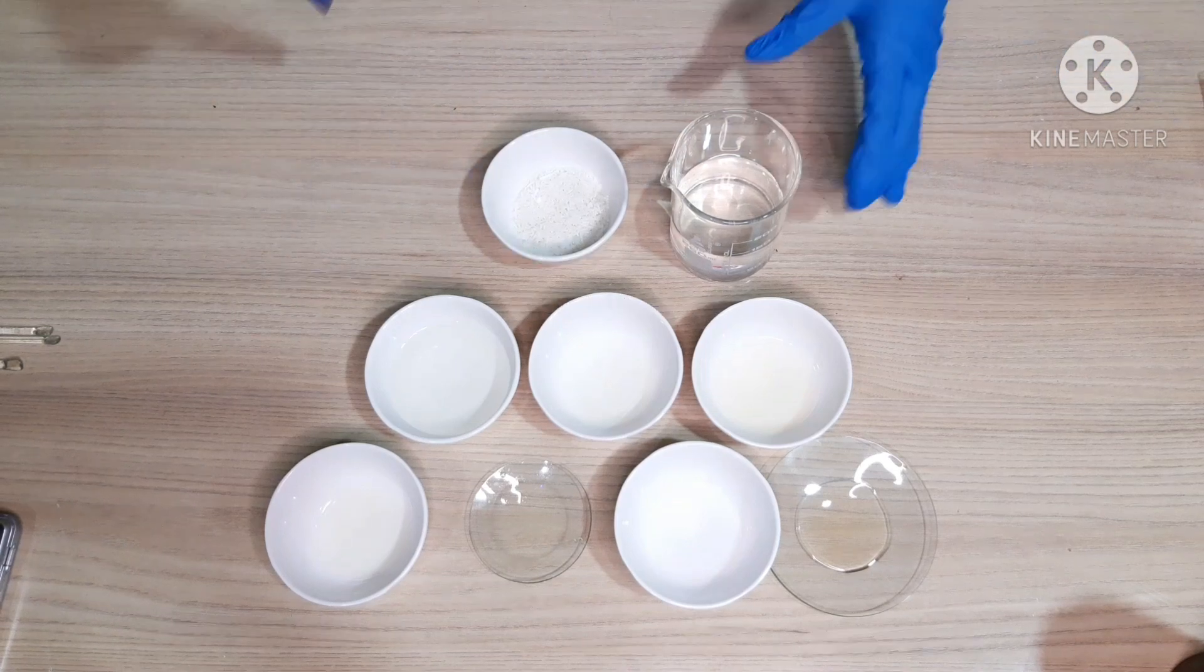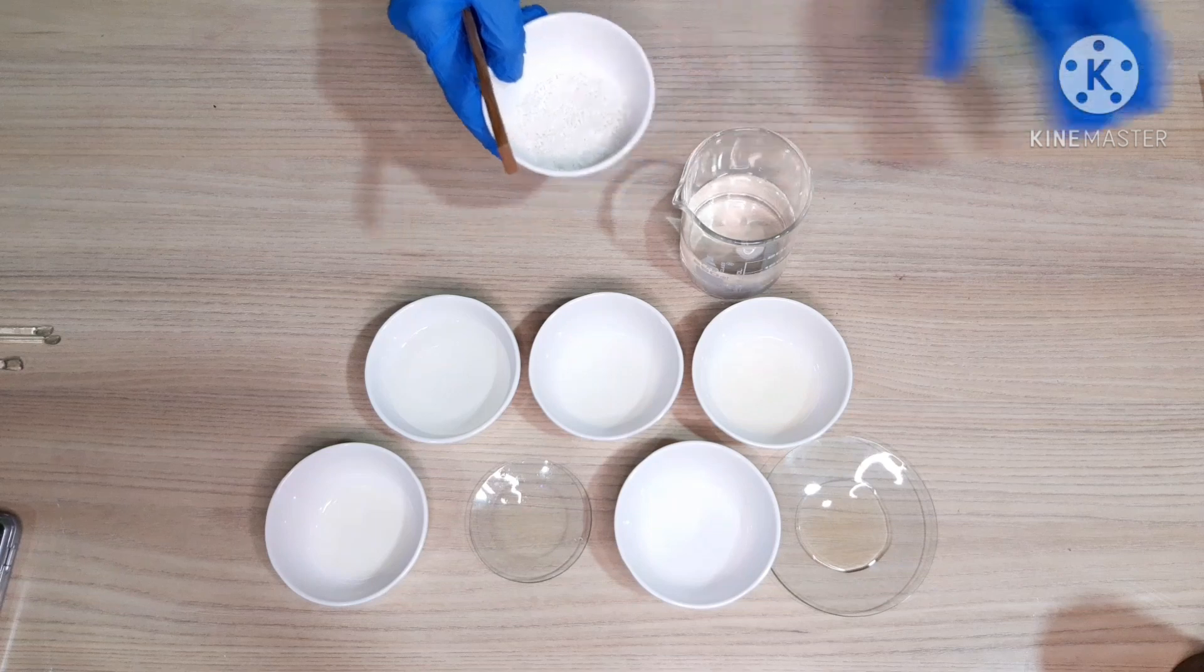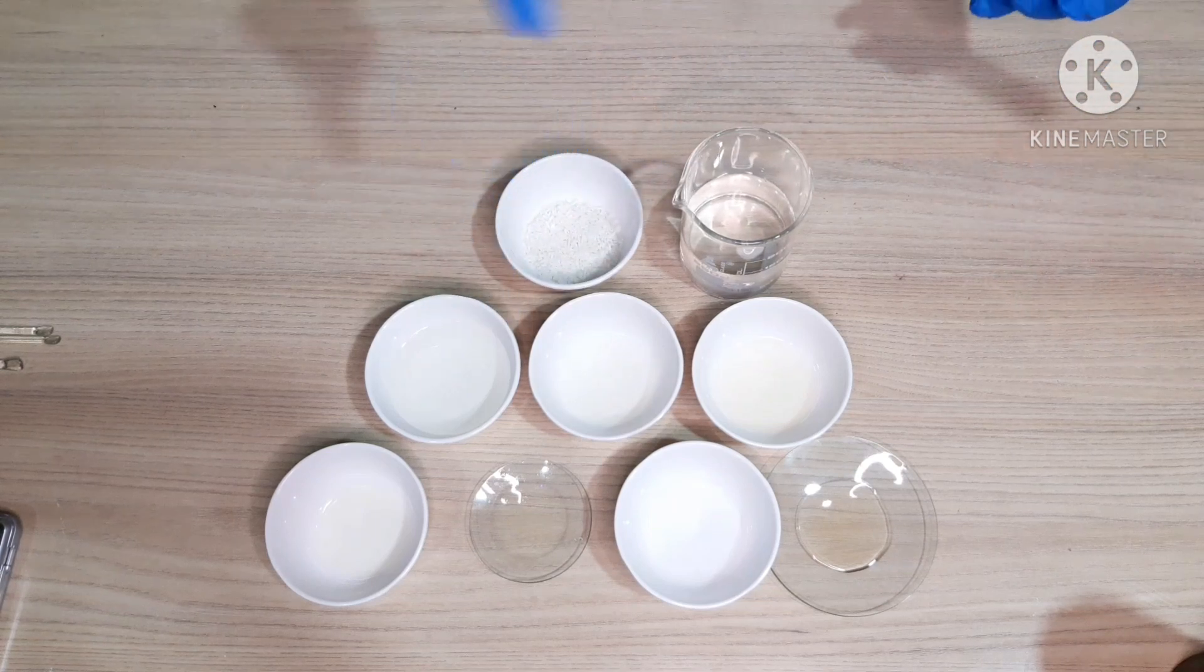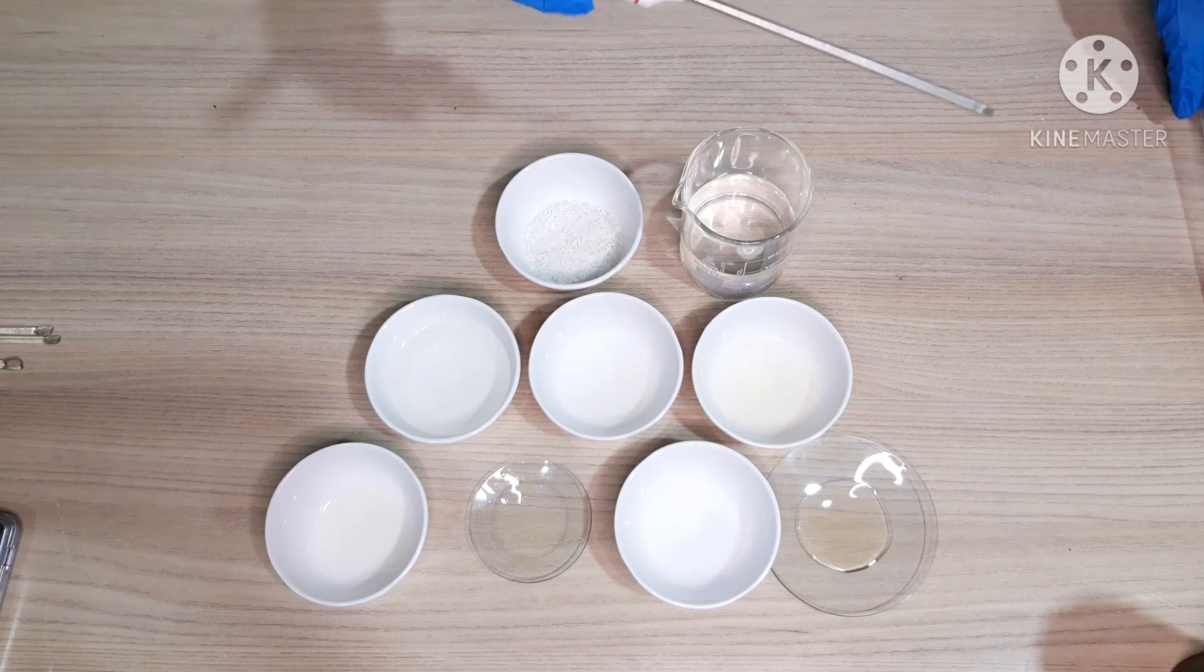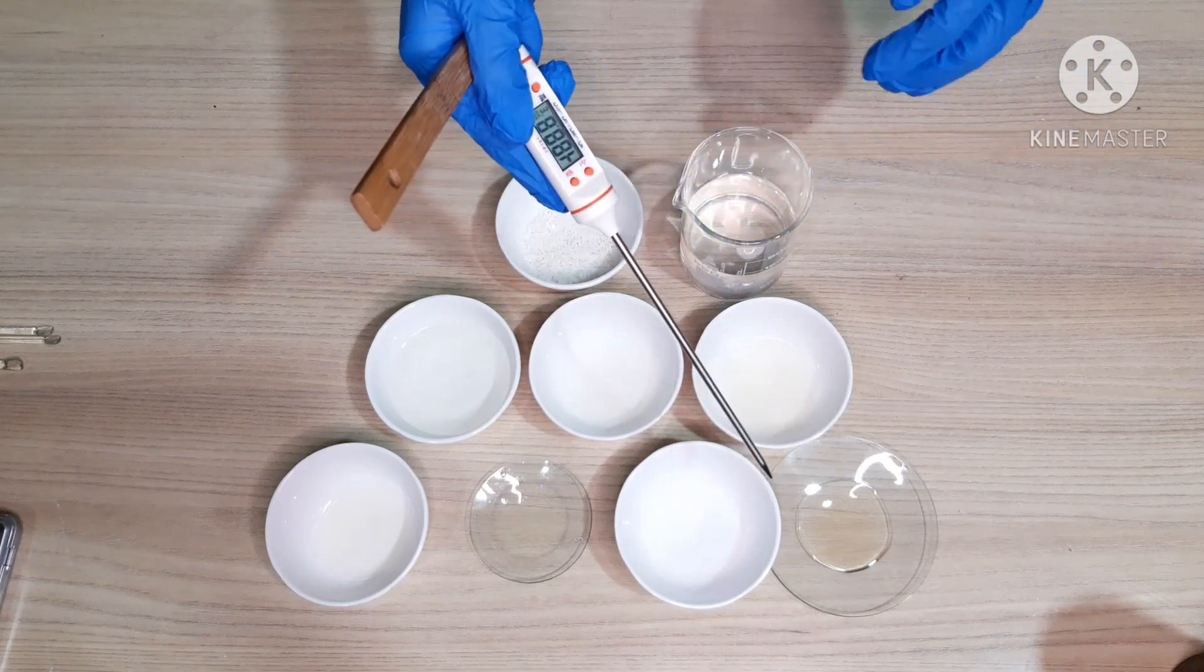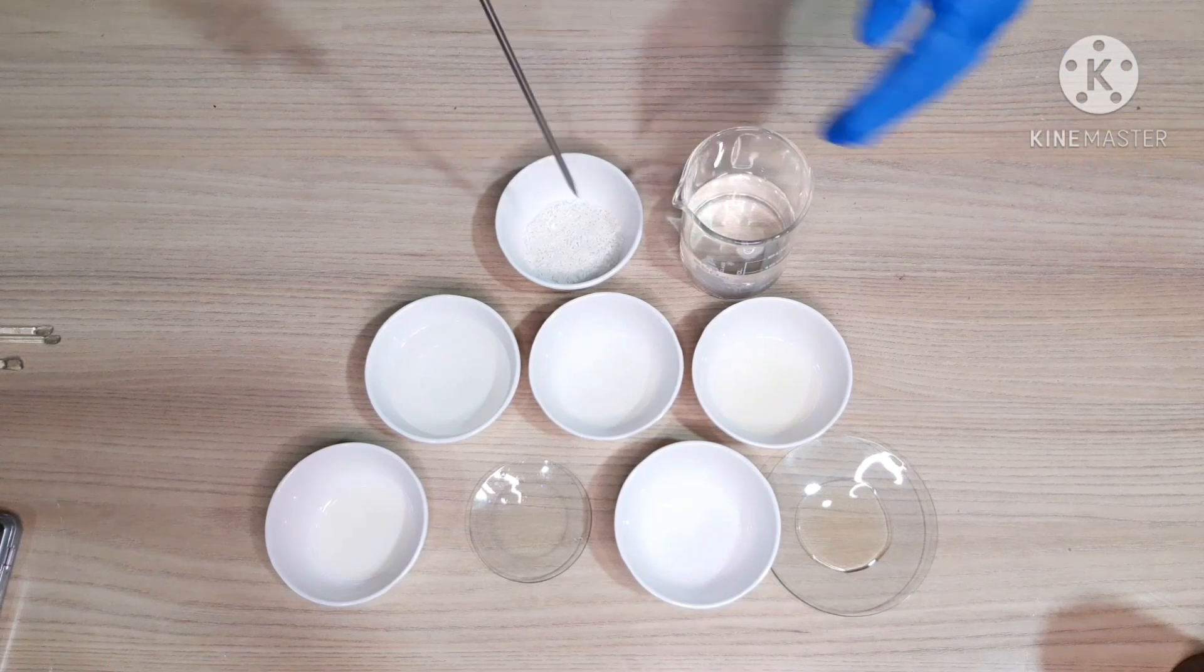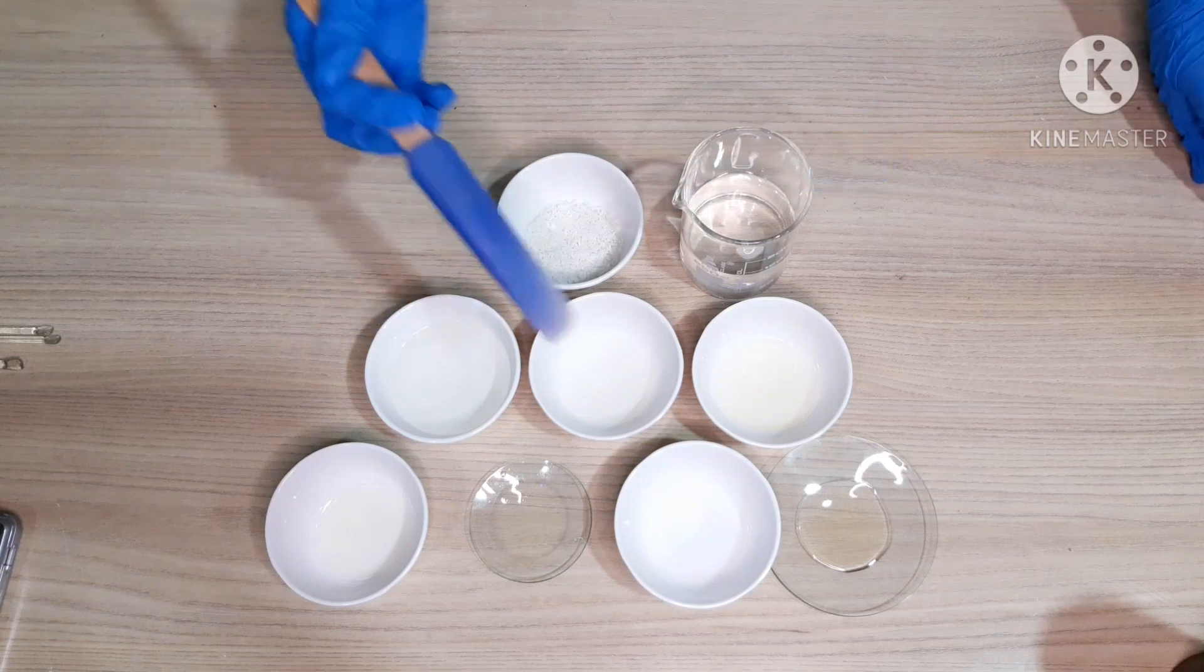First, I will add SCI pearls in water and heat it up to 90 degrees or 95 degrees Centigrade. These will completely melt only at 80 degrees Centigrade and above. I'll check the temperature using the thermometer while I'm heating this on a double boiler.